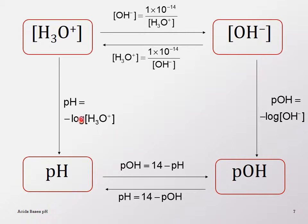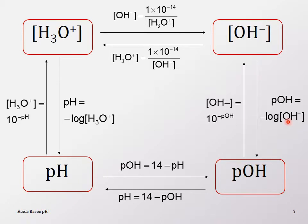pH is the negative log of hydronium ion concentration; pOH is the negative log of hydroxide ion concentration. To go in reverse and calculate the concentrations from pH or pOH, you take 10 to the negative power of the pH or pOH value. Those are all the relationships.